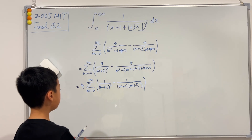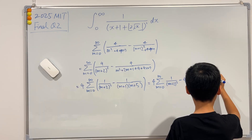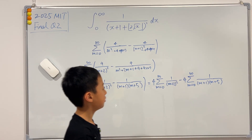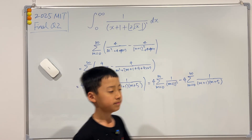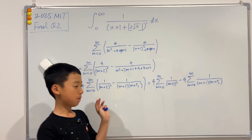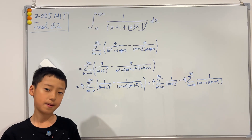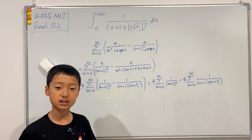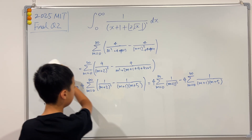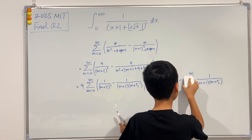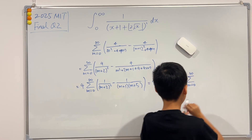Now I'm going to split this into two different sigmas. First, I'll deal with the partial fraction: 4 over (m+1)(m+5) decomposes into 1/(m+1) minus 1/(m+5). The constant on top turns out to be exactly 4, so it cancels with the 4 we have, leaving just the partial fraction result.